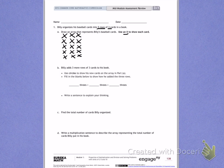Part B. Billy adds three more rows of three cards to his book. So this time he's adding three more rows of three. Use circles to show his new cards in the array in Part A. So this time I'm going to add circles, and I'm going to continue on my array by adding three rows of three. One row of three, two rows of three, and three rows of three.